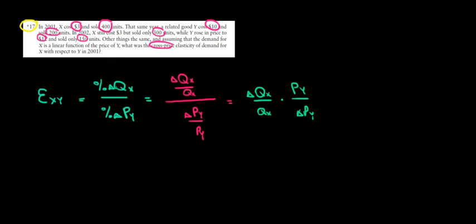Let's work. Let's write the data. Basically, this whole text, let's have it in very simple terms. We are in year 2001. We know that X costs $3, so price of X equals 3. Quantity demanded of X is equal to 400 units. And then we also know that in 2001 the price of Y is equal to $10. Quantity demanded of Y is equal to 200 units.